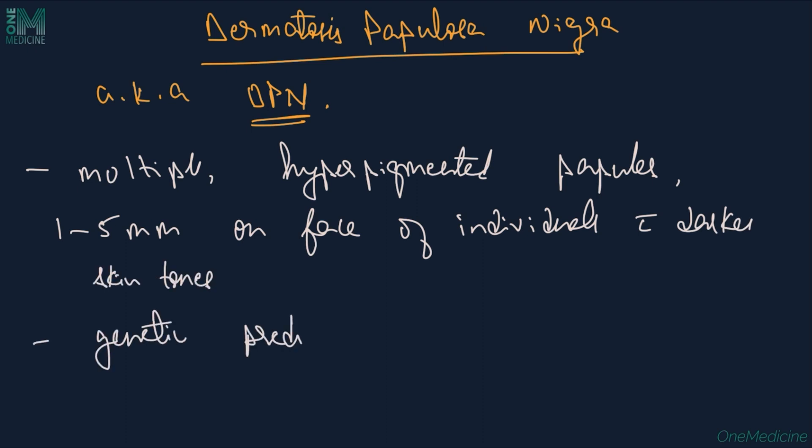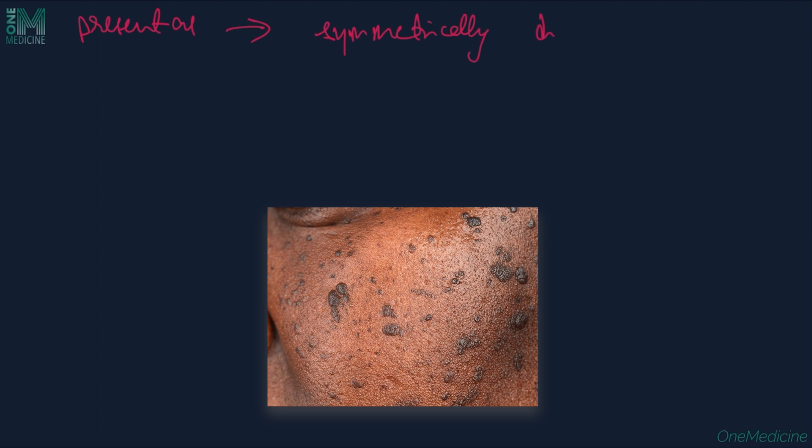There is also a genetic predisposition to DPN, with over 50% of patients reporting the condition in other family members. These lesions present as symmetrically distributed hyperpigmented papules on the face, less frequently occurring on the neck and trunk.